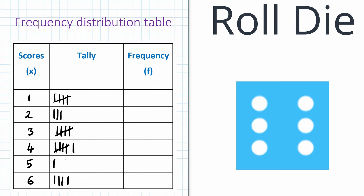The frequency column is just to record how many ones came out, how many twos, threes, fours, and so on. One — we have five, so we write down five. Two is three — write down three. Three is five — write down five. Four is six — write down six. Five is one — write down one. Six is four — write down four.